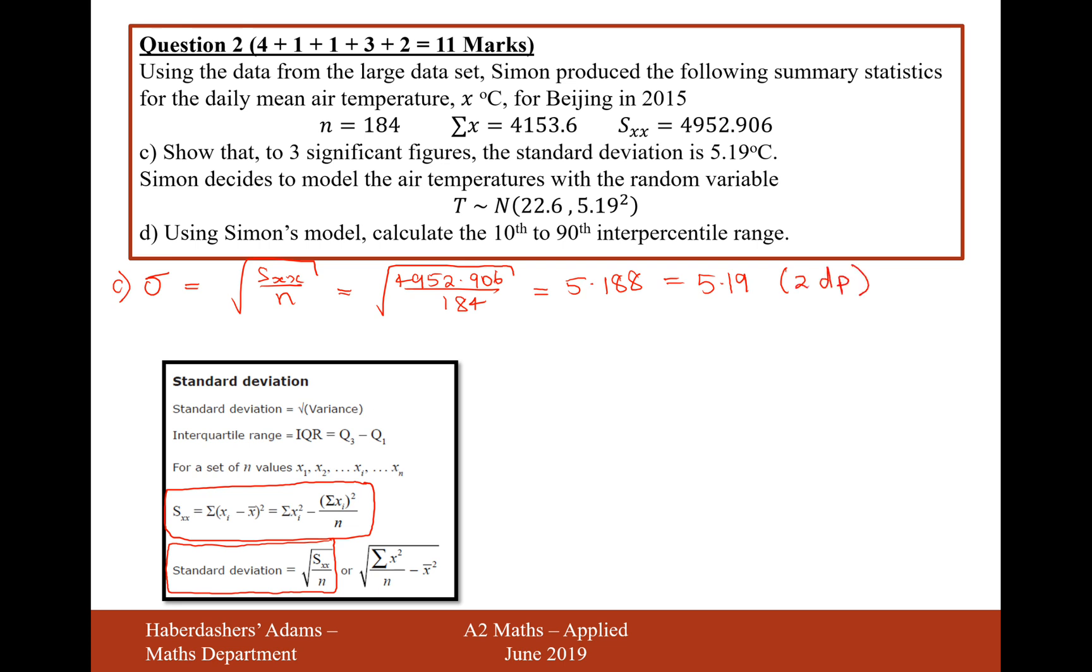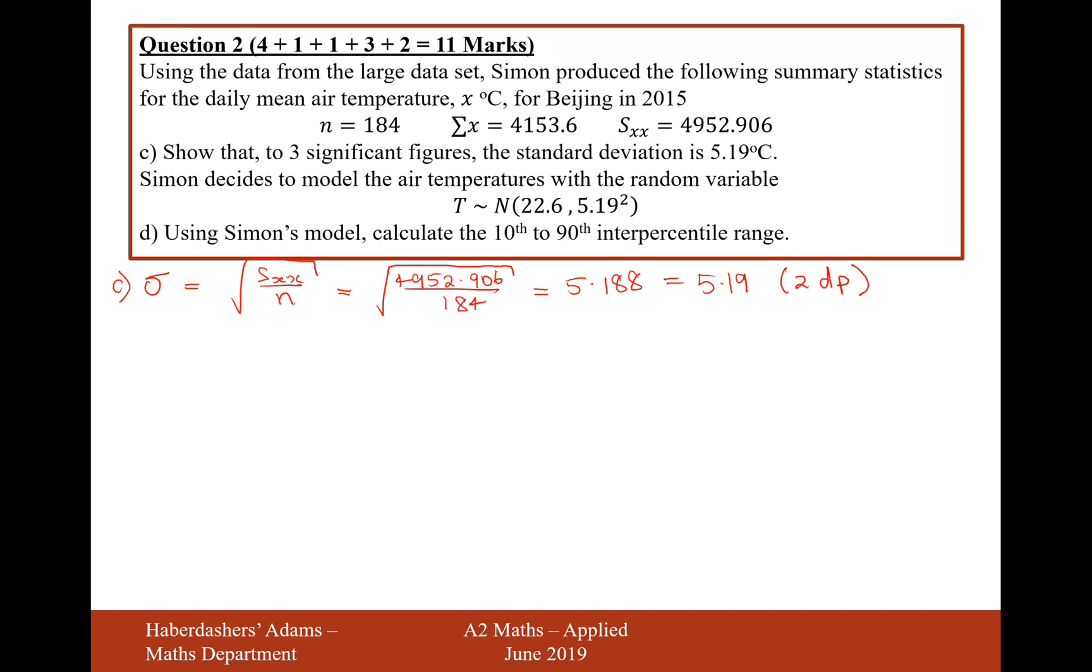Okay, so there we are, that's our answer for part C. So moving on to part D now. Simon decides to model the air temperatures with the random variable T, normally distributed with a mean of 22.6 and a standard deviation of 5.19. Using Simon's model, calculate the 10th to the 90th interpercentile range.